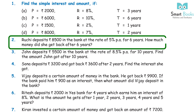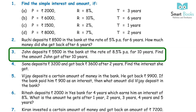Question 2: Ruchi deposits Rs 8,500 in the bank at the rate of 5% PA for 6 years. How much money did she get back after 6 years? Answer: Rs 11,050. Question 3: John deposited Rs 5,500 in the bank at the rate of 8.5% PA for 10 years. Find the amount John got after 10 years. Answer: Rs 10,175.